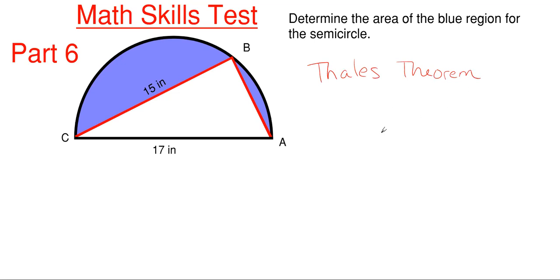So Thales theorem states if all three interior angles of a triangle are inscribed angles, meaning all angles of a triangle are inside of a circle, and if one side of the triangle is the diameter of the circle, the angle opposite to the diameter is a right angle.